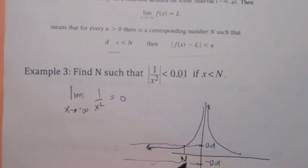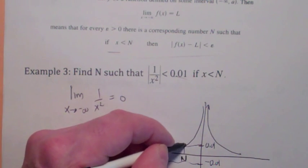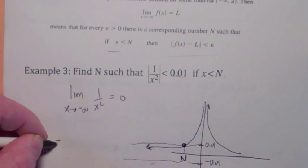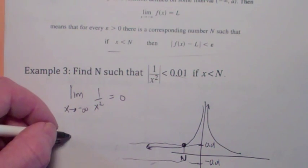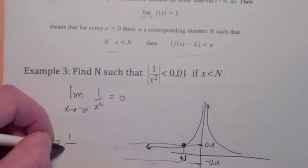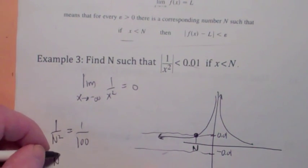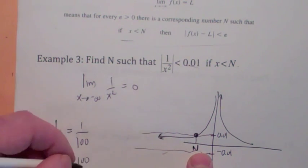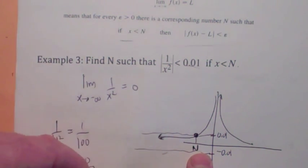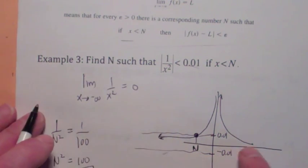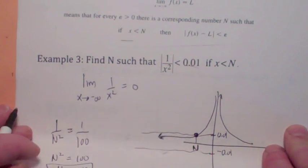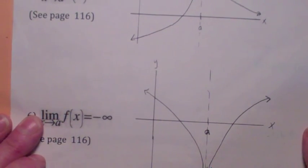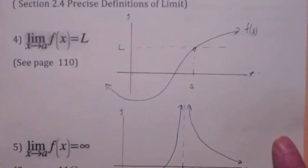To find N, note that f(N) has to equal 0.01. So 1/N² = 0.01, which is 1/100, giving N² = 100. We're looking at the negative value of N, so N = negative 10 is the cutoff point. If x is to the left of negative 10, the y values will be in that band. There are a total of six limit definitions — we just did three from section 2.6, and the other three are from section 2.4.